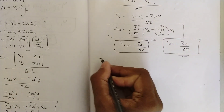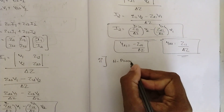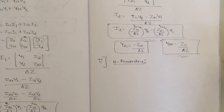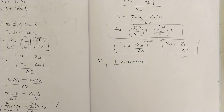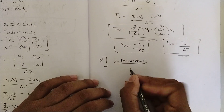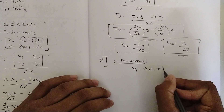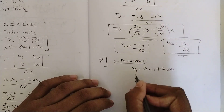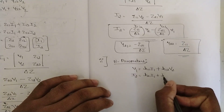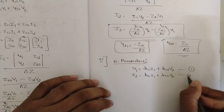Now next is Y parameters in terms of H parameters. We are going to compare equations and solve, the same method I explained in the previous video. First write the set of H parameter equations: V1 = H11·I1 + H12·V2, and I2 = H21·I1 + H22·V2. Name these equation 1 and equation 2.